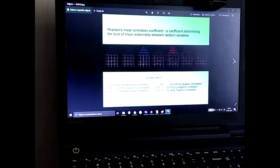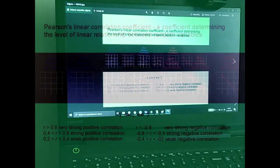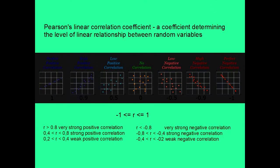The Pearson's linear correlation coefficient is the coefficient determining the level of linear relationship between random variables. If you have r equal to 1, all the data are gathered on a line. If you go down, the dependence is still very well seen, but the points don't keep to the line so tightly.